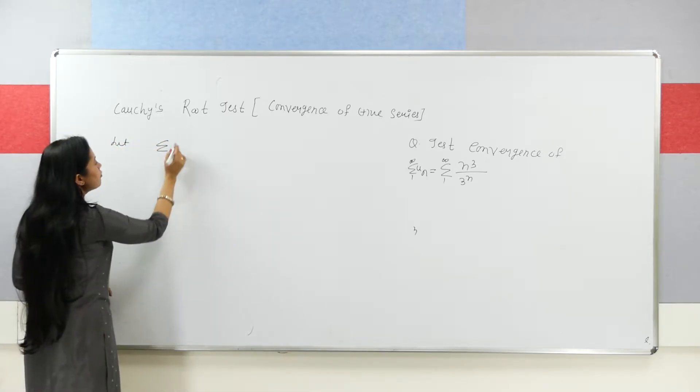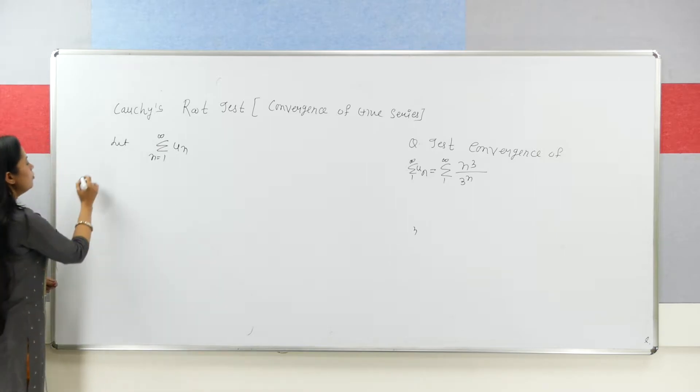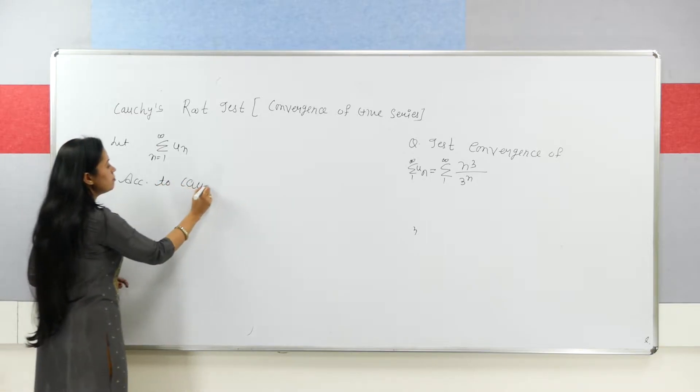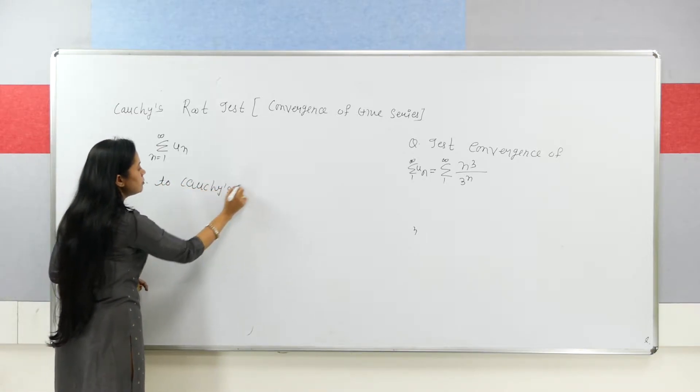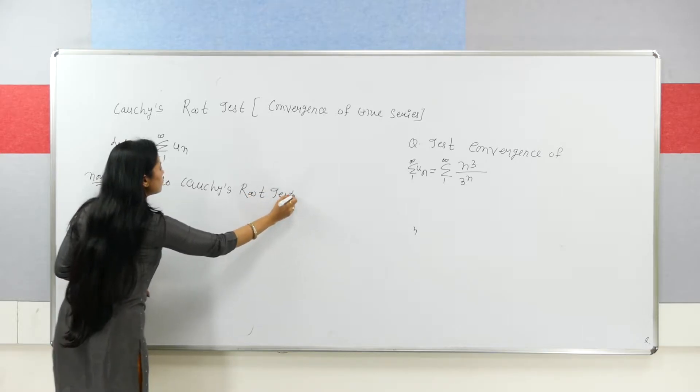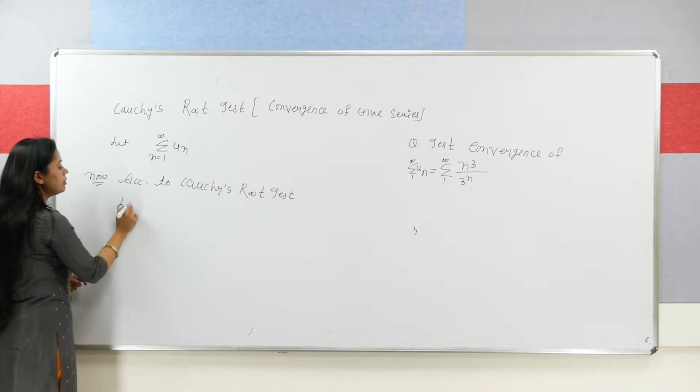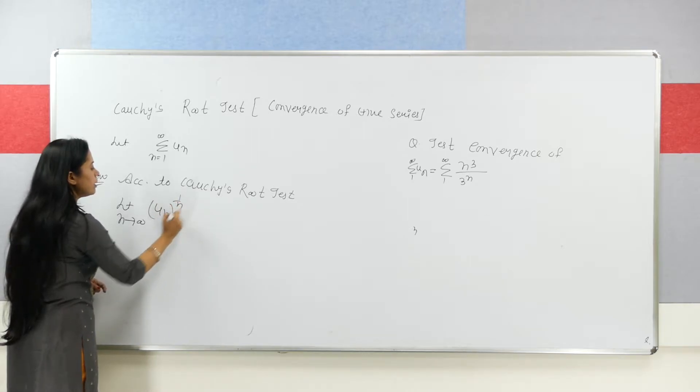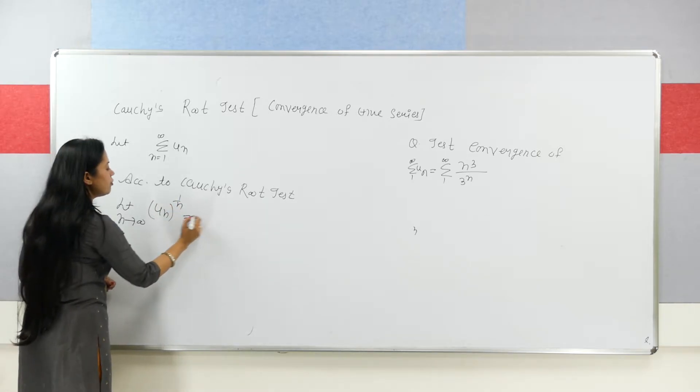Convergence of this series un where n is 1 to infinity. Now according to Cauchy's Root Test we calculate a limit that limit n tends to infinity un to the power 1 by n, and if its value is equal to lambda then three cases will be there.